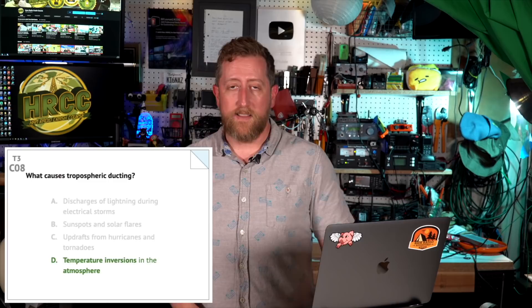T3C08: What causes tropospheric ducting? The answer is D — temperature inversions in the atmosphere. Cold fronts hitting warm fronts creates this disturbance — this pocket — where VHF signals can refract.